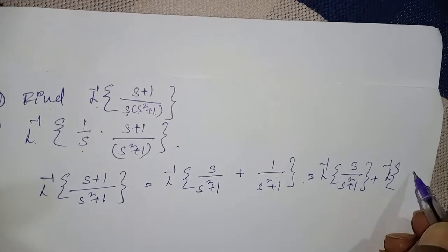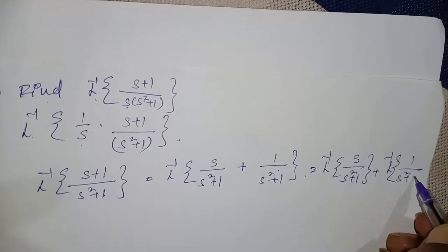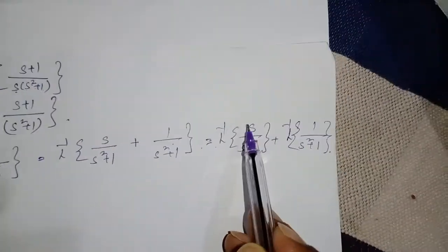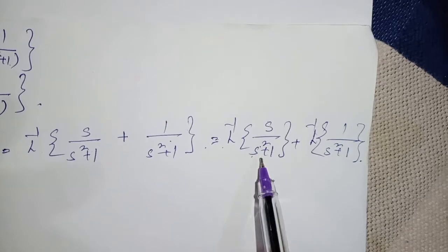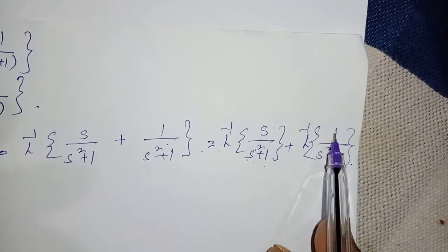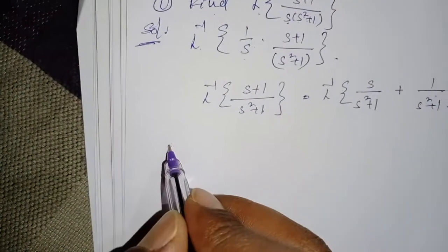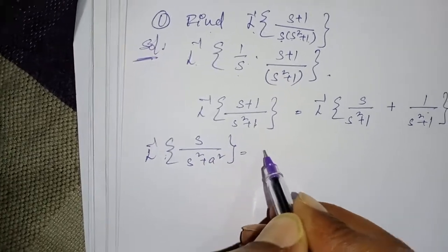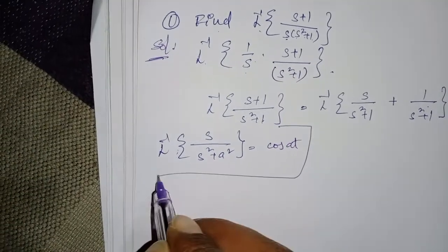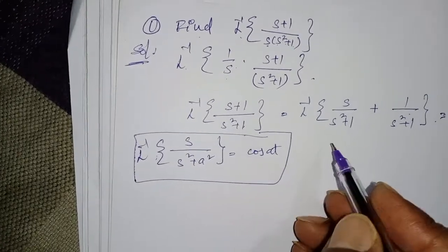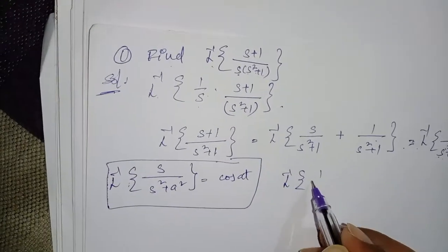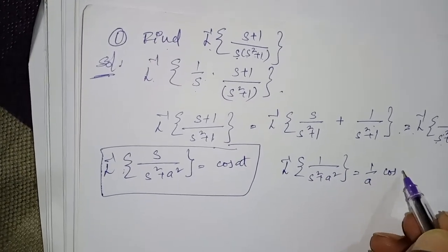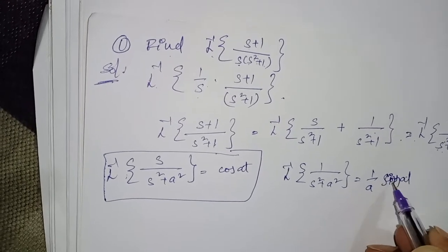This gives L inverse of s/(s²+1) plus L inverse of 1/(s²+1). We know that L inverse of s/(s²+a²) equals cos(at), and L inverse of 1/(s²+a²) equals (1/a)sin(at).